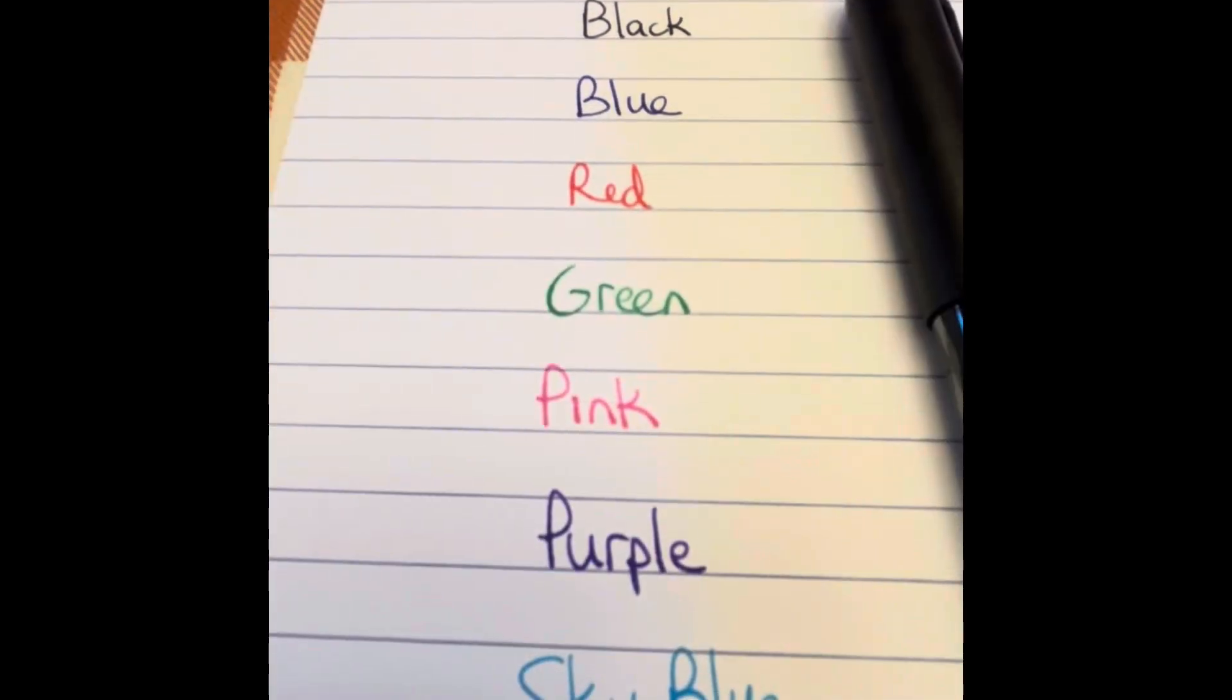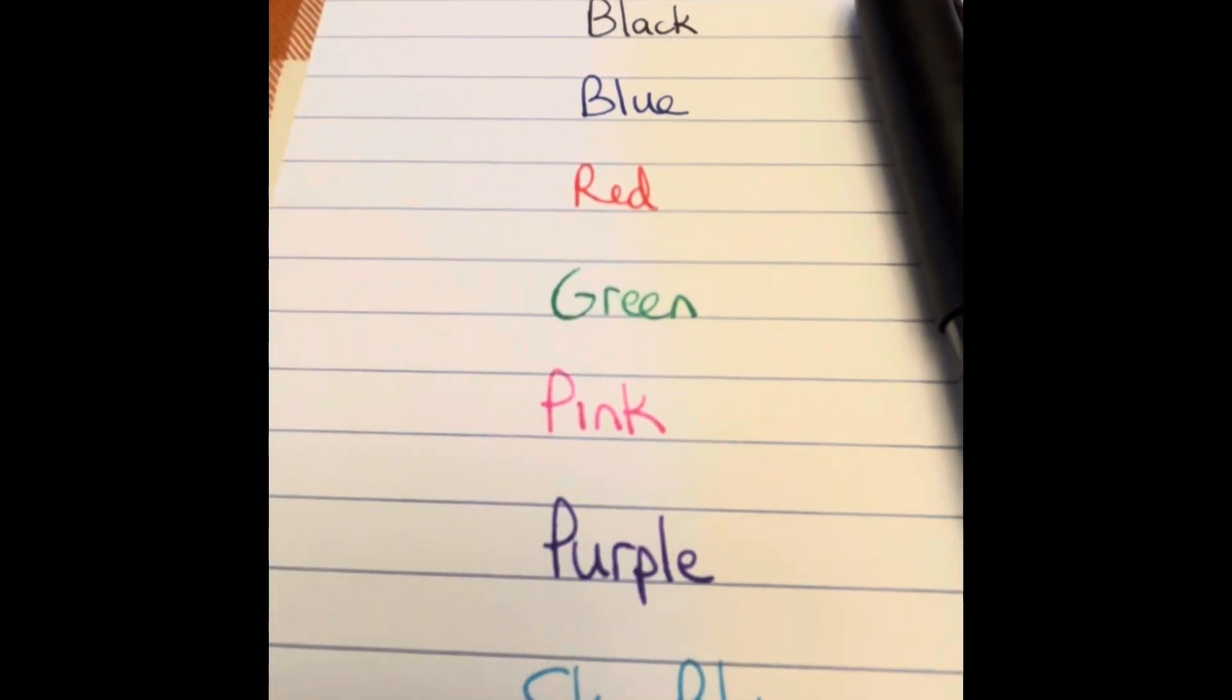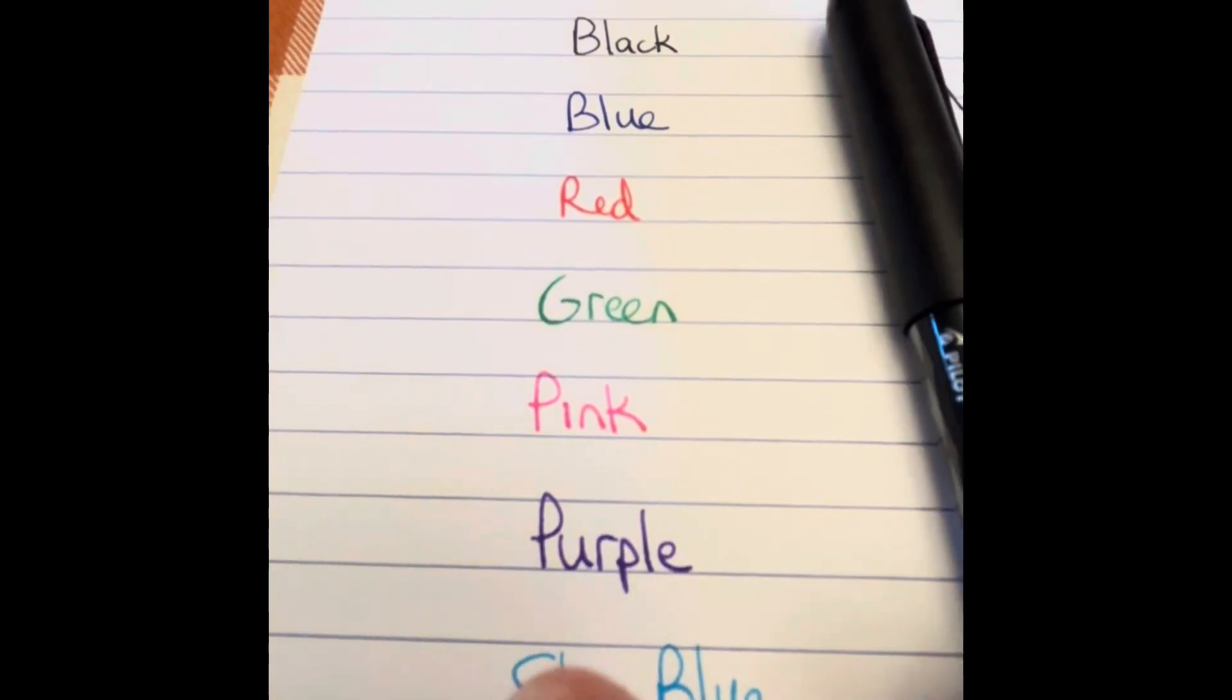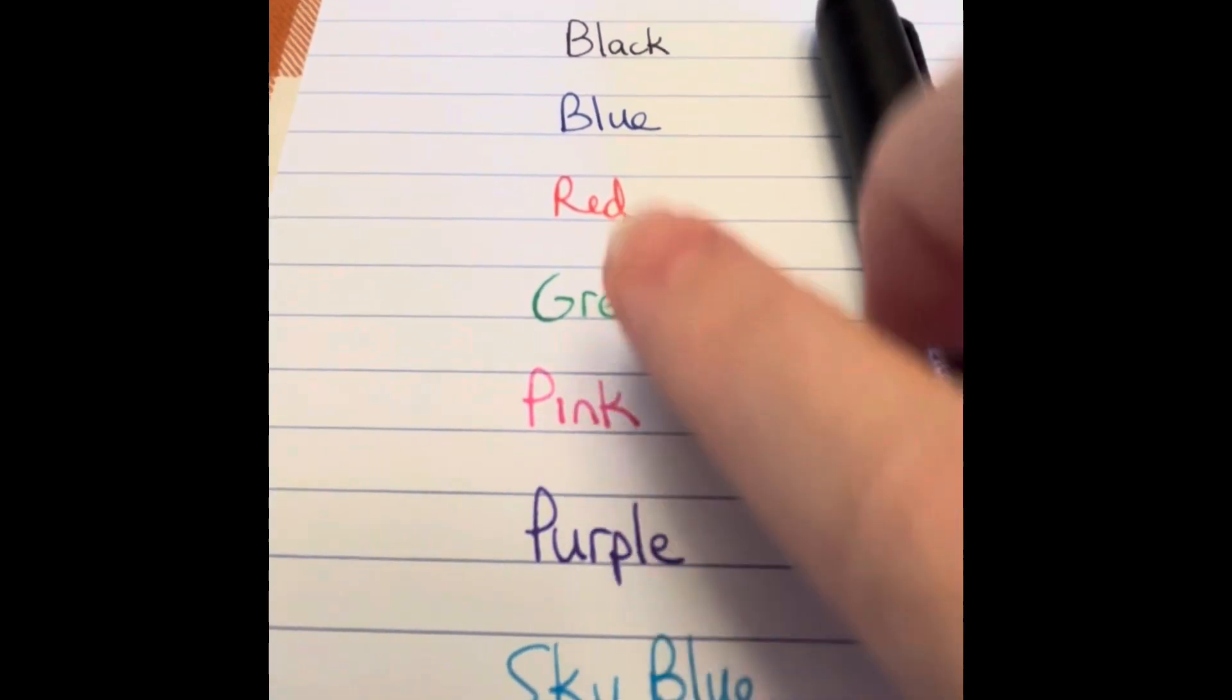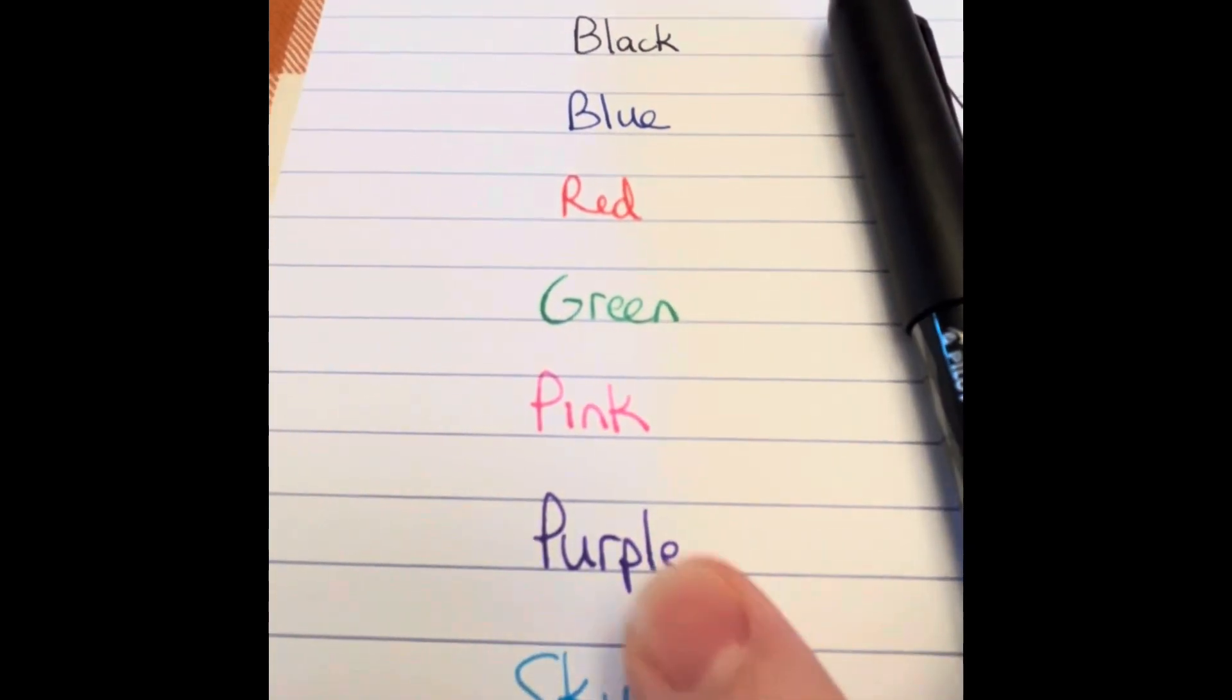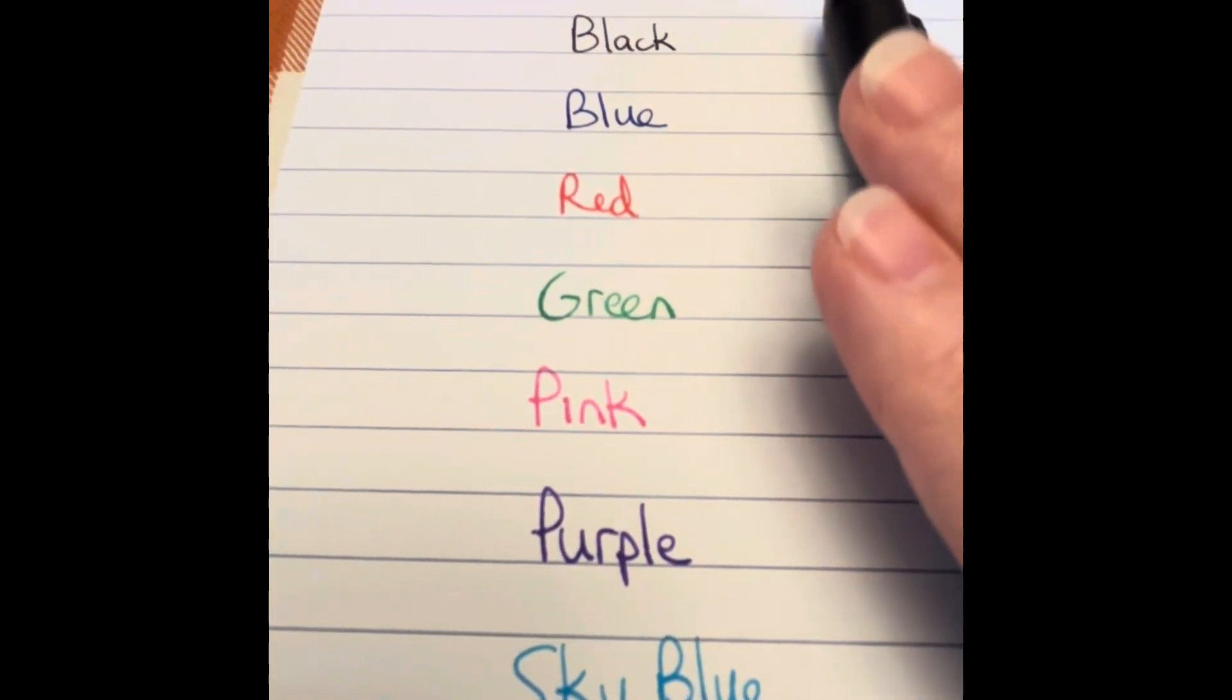As you can see all of these colors are nice and saturated and these pens do create a thick line and not a thin line. So they've got what they call a medium nib on them.